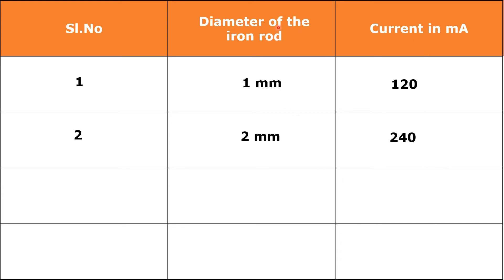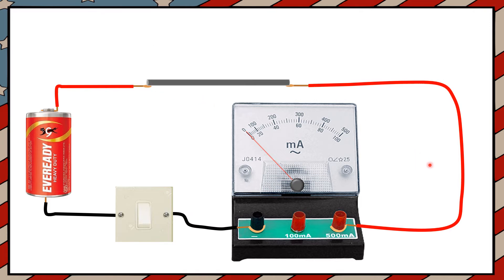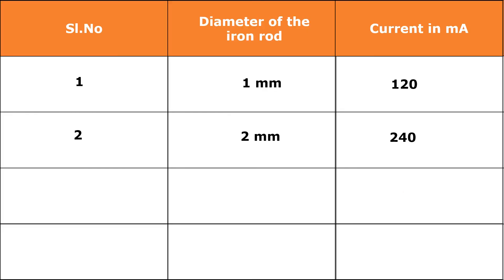When the diameter is increasing, current in the circuit is also increasing. Next, in the third situation, I will fill this gap with an iron rod of diameter 3 mm. Turn the switch on. Now, more current is flowing through this iron rod — that means, 360 milliamperes current is flowing. Note down these values in the table.